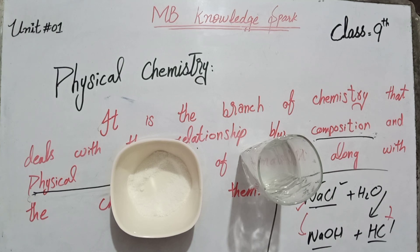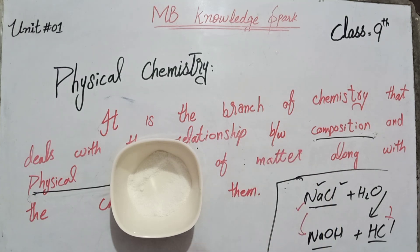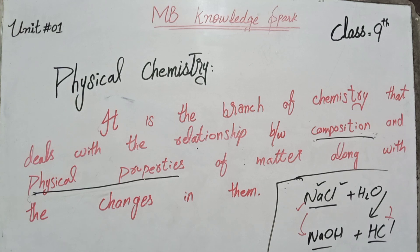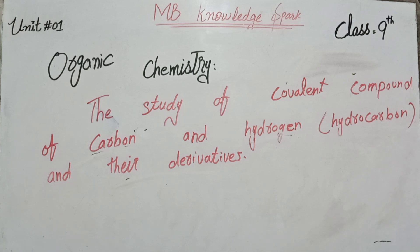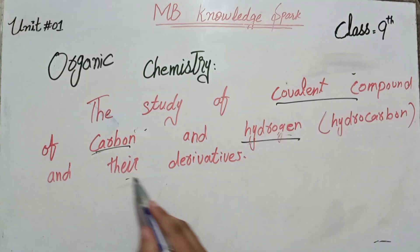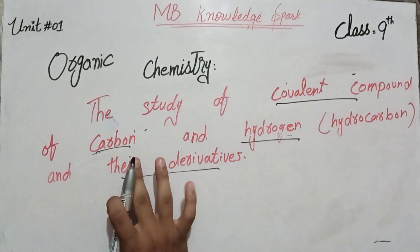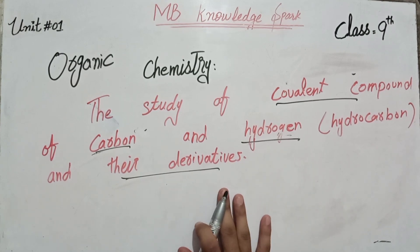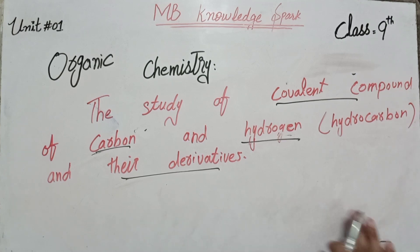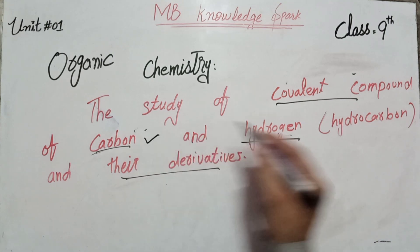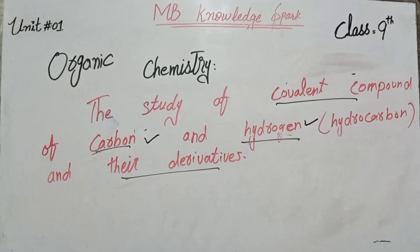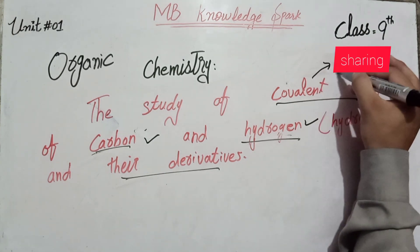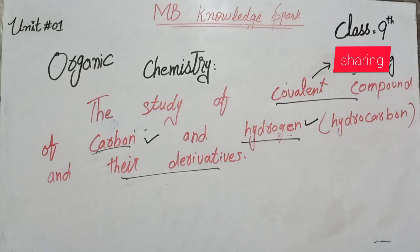We will study all these changes in physical chemistry. Physical chemistry is the relationship between the composition and physical properties of matter along with the changes in them. When we study the composition and physical properties of matter, or when matter reacts, we study the changes in composition.